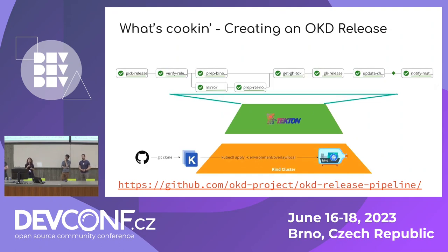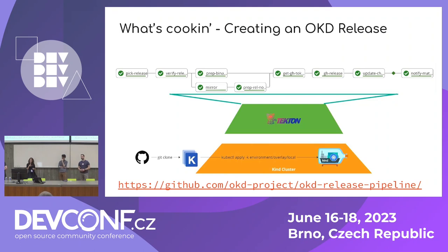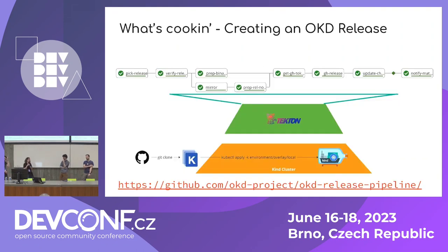The next pipeline is the one we use to release OKD. Today, the OKD components are still built in the Prow system, but Alessandro is actively working with colleagues to deliver an OKD payload pipeline, so you'll soon be able to build those components in Tekton too. This pipeline queries the release controller on the Prow CI cluster to get the tag and digest of a valid and verified release, signs the release, mirrors the components, generates all the release notes, and updates the channels so you can also upgrade your clusters.